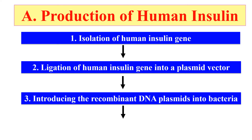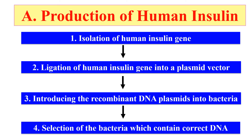Once transferred into E. coli, the transformed E. coli bacteria — that is, the bacteria which contain the recombinant DNA molecule — are selected and allowed for growth. After growth, they produce insulin that can be extracted and used for various therapeutic purposes.